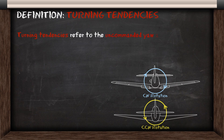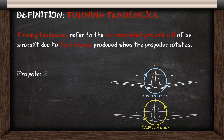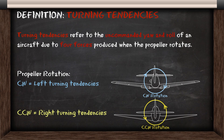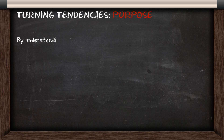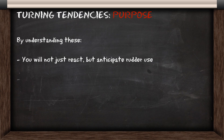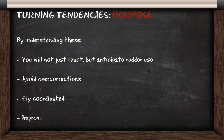Turning tendencies refer to the uncommanded yaw and roll of an aircraft due to the four forces produced when the propeller rotates. If the propeller is rotating clockwise it'll be left turning tendencies, and if it's counterclockwise it'll be right turning tendencies. By understanding the turning tendencies it'll allow you to not just react but anticipate the rudder use, avoid over-correcting, and fly coordinated, which will improve performance for your airplane.